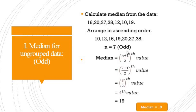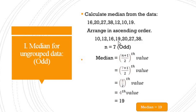Applying the formula: Median = ((n + 1) / 2)th value = (7 + 1) / 2 = 8 / 2 = 4th value. In ascending order, the 4th value is 19. Therefore, median is equal to 19, which is the central value with equal values on left and right hand sides.